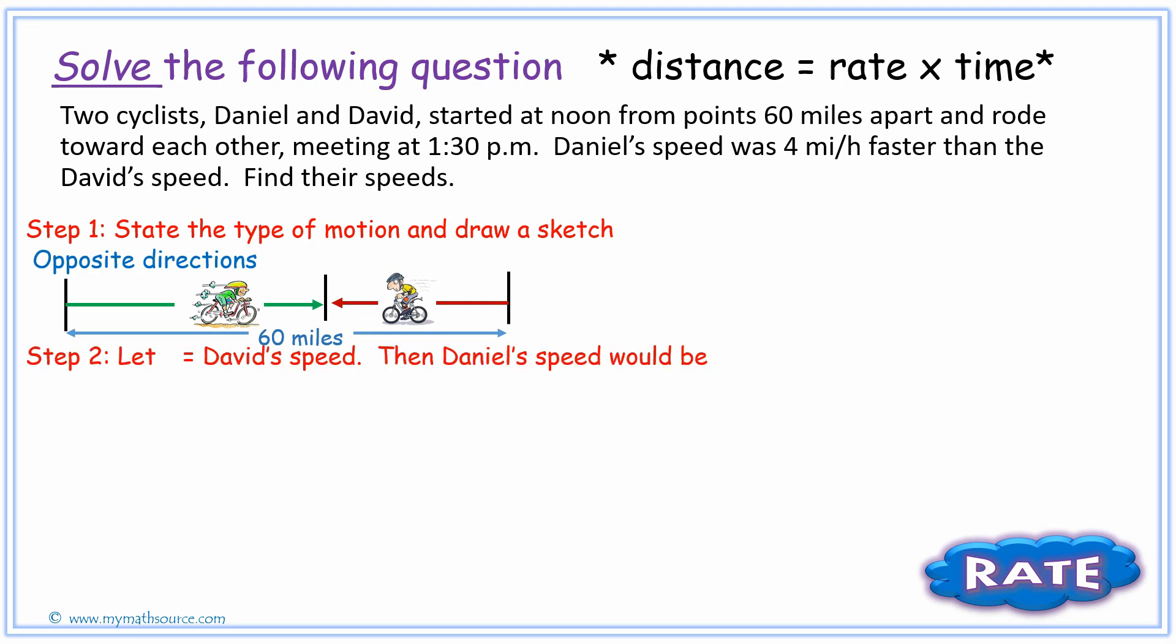Step two: we're going to have to let a variable equal to David's speed and then also Daniel's speed. Because we're dealing with rate instead of speed, we could use the letter r to represent David's speed. The reason why we're going to let r be David's speed is because Daniel's speed is four miles per hour faster. That allows us to make it a bit easier. It doesn't really matter which one you choose as long as you're consistent, but since it's already written for us in that format, it's easier just to keep David's speed as r and then Daniel's speed, since it says four miles per hour faster as underlined, will become r plus 4.